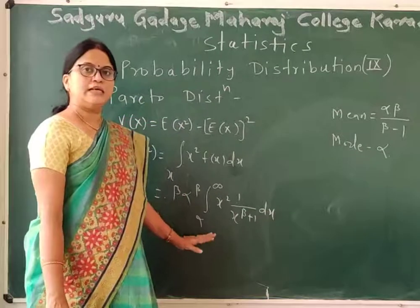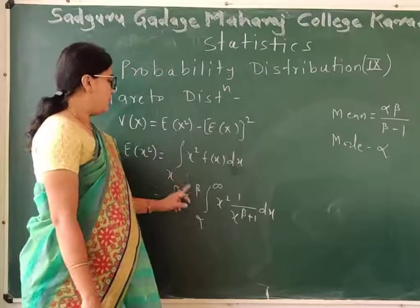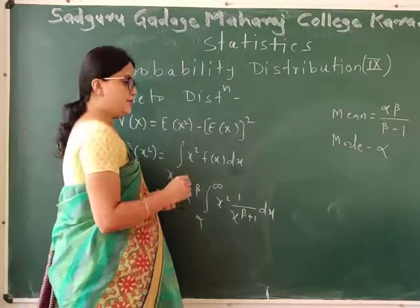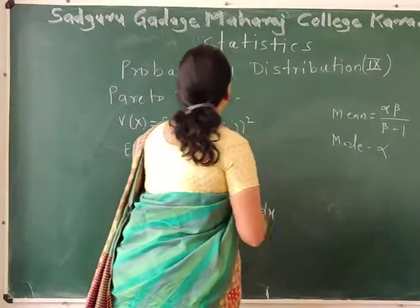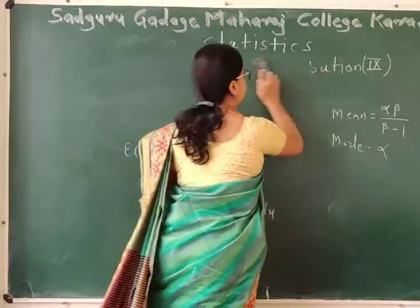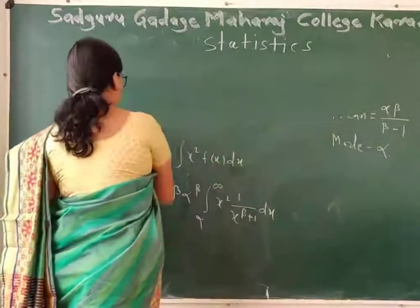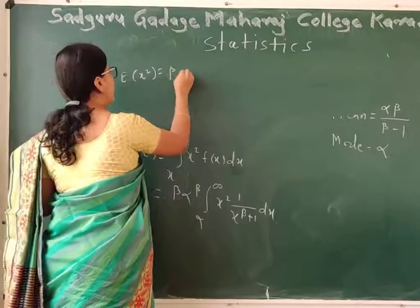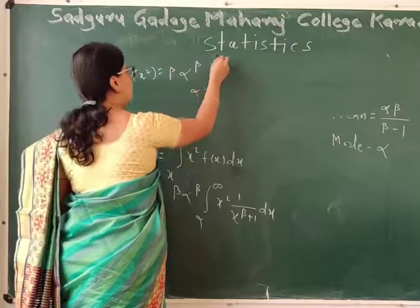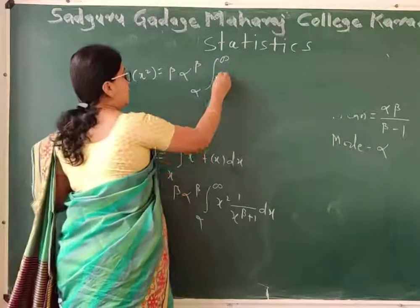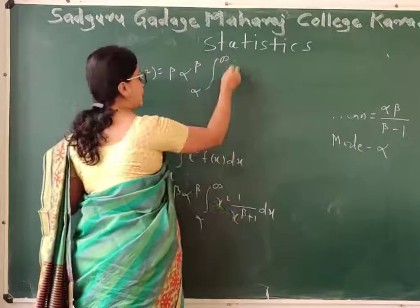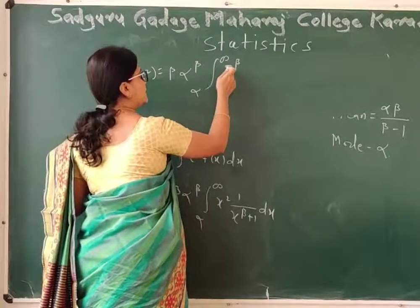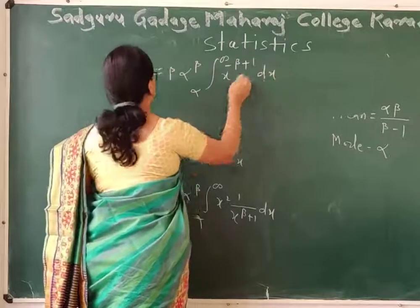Over here we have 1 divided by x raised to beta plus 1. We replace the range of x as well as the value of x. Now let me find the integration. The powers of x combine as x raised to minus beta minus 1 plus 2, so we get x raised to minus beta plus 1, dx.